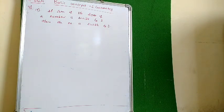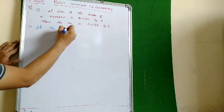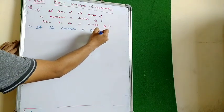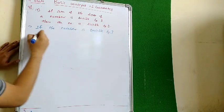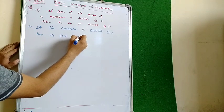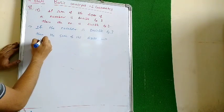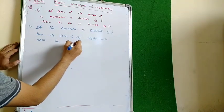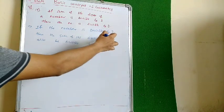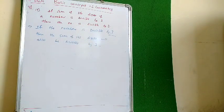So I will write the converse: if the number is divisible by 3, then the sum of its digits will also be divisible by 3. We already know that if the number is divisible by 3, then the sum of the digits will also be divisible by 3.